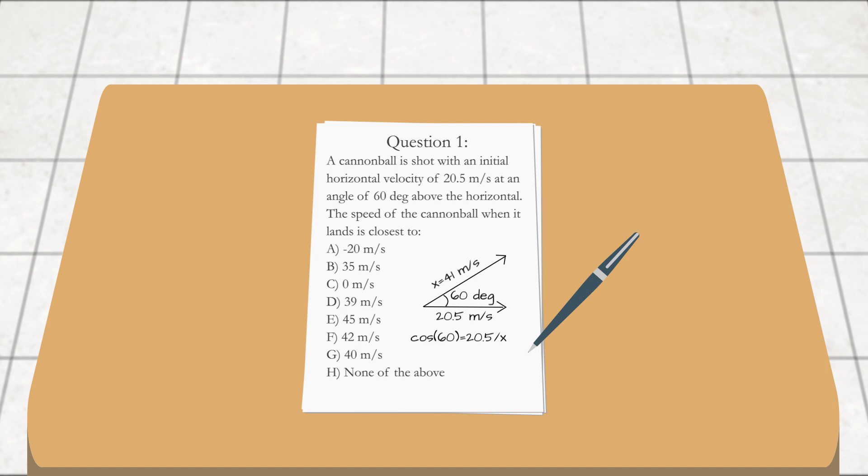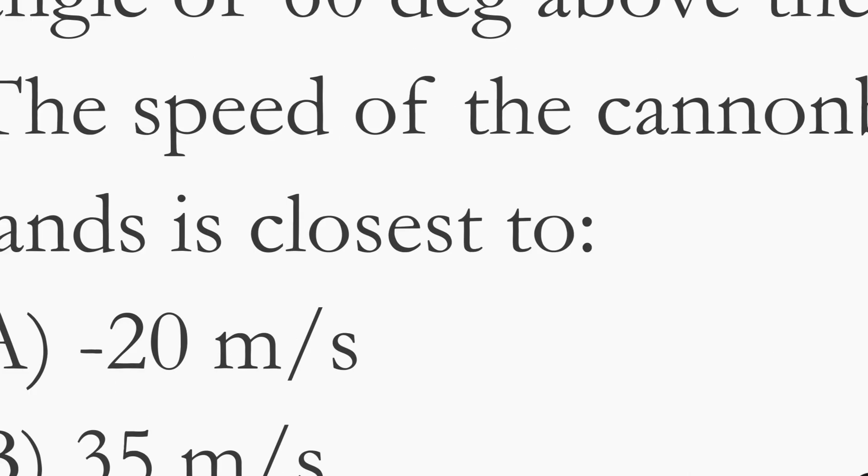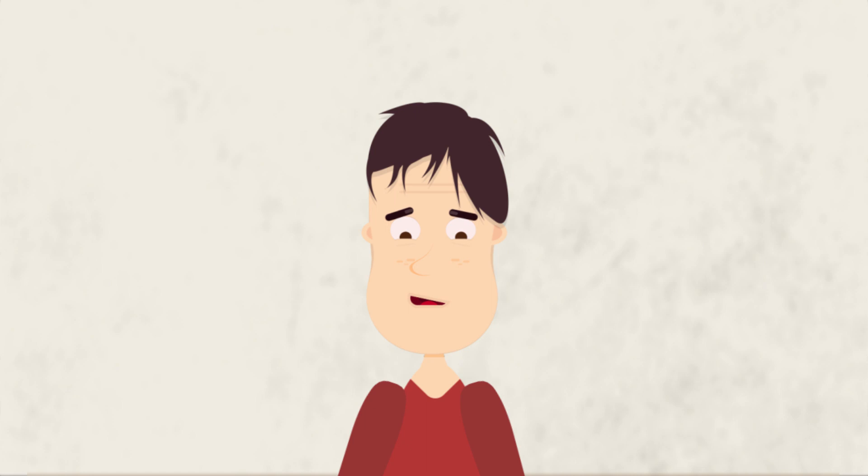And looking at the many multiple choice answers, A is definitely out because negative velocity, C is out. Well, we already know it's 41, I don't know why I'm even eliminating answers. So let's just find 41. F is 42, G is 40, and H is none of the above. Well it's got to be H I guess, but it says the speed of the cannonball when it lands is closest to. Is 41 closer to none of the above or 40 or 42?